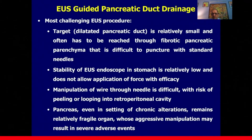EUS-guided pancreatic duct drainage is the most challenging EUS procedure. First, the target — the dilated pancreatic duct — is a relatively small structure that often has to be reached through a fibrotic pancreatic parenchyma very difficult to puncture with standard needles. The stability of the EUS endoscope in the stomach is relatively low, which does not allow the application of force in a proper direction. Manipulation of the wire through the needle in a small pancreatic duct is difficult, with risk of peeling or kinking of the guide wire into the retroperitoneal cavity.